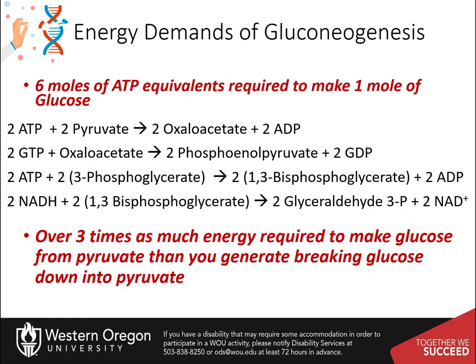Per glucose molecule made, two ATP are used in the pyruvate carboxylase step, two GTP are used in the phosphoenolpyruvate carboxykinase step, and two ATP are used in the kinase reaction to create 1,3-bisphosphoglycerate from 3-phosphoglycerate. There is also the loss of two moles of NADH during the reverse reaction to create glyceraldehyde 3-phosphate from 1,3-bisphosphoglycerate, which reduces energy potential through oxidative phosphorylation in the mitochondria. Plus, there are energy costs to changing the metabolite pools in the matrix of the mitochondria and for transporting molecules across the mitochondrial membrane that we have not considered here.